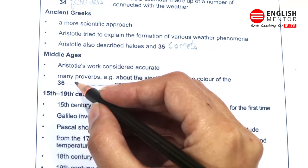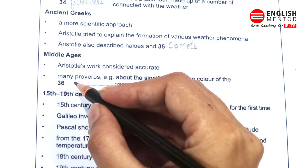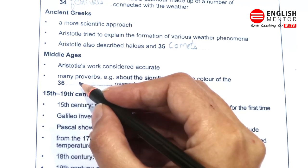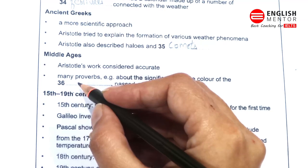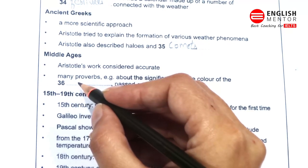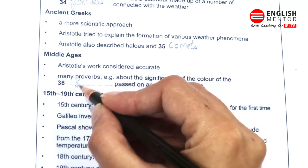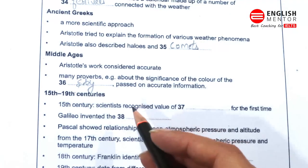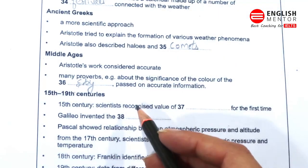For nearly two thousand years, Aristotle's work was accepted as the chief authority on weather theory. Alongside this though, in the Middle Ages, weather observations were passed on in the form of proverbs, such as red sky at night, shepherd's delight, red sky in the morning, shepherd's warning. Many of these are based on very good observations and are accurate, as contemporary meteorologists have discovered.